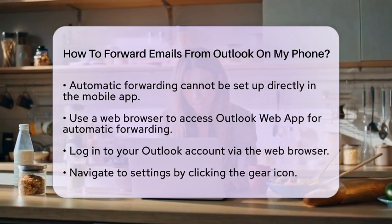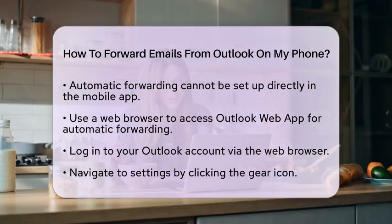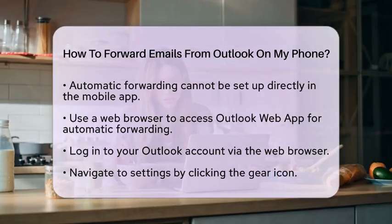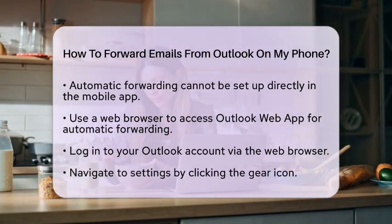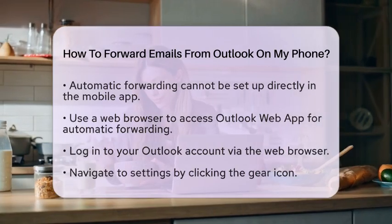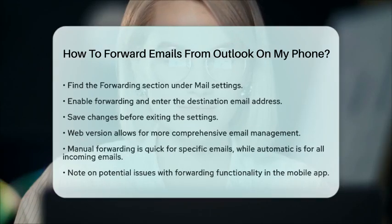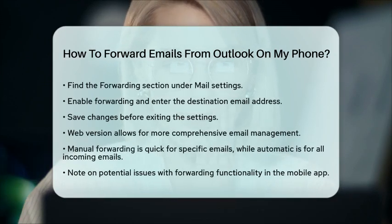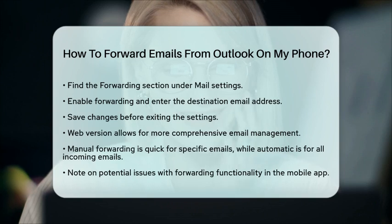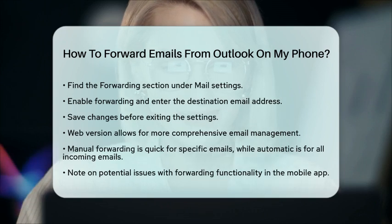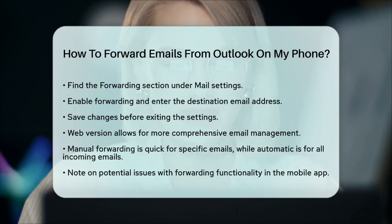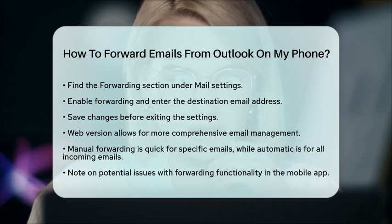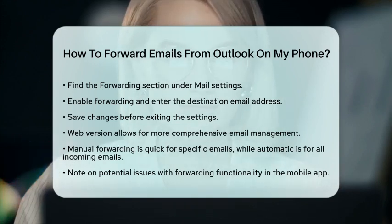If you only have access to your phone, using the web browser version of Outlook is the best way to set up automatic forwarding. The manual forwarding feature in the app is great for quickly sending specific emails, while the web version allows you to manage your email forwarding settings more comprehensively.